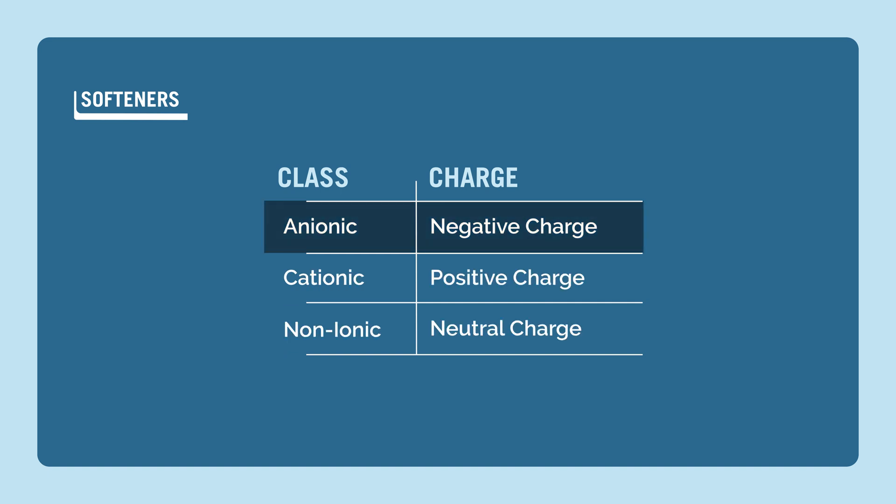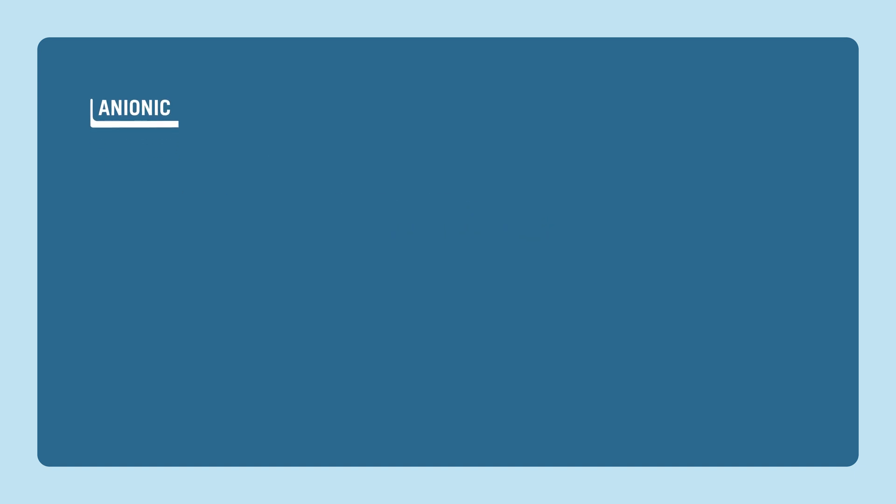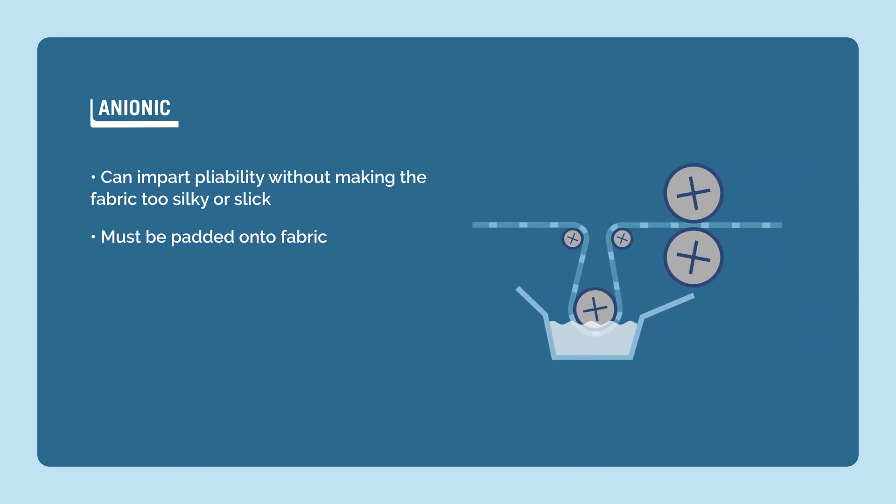Anionic softeners have a negative charge, as does wet cotton. Anionic softeners can impart pliability without making the fabric too silky or slick. Because of their charge, they must be padded onto fabric.